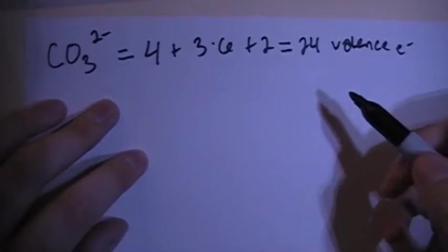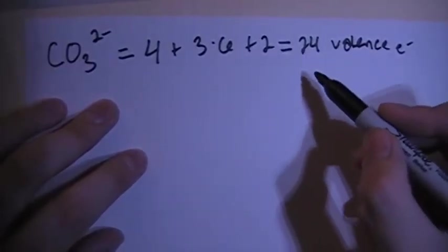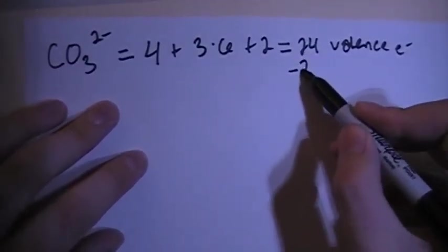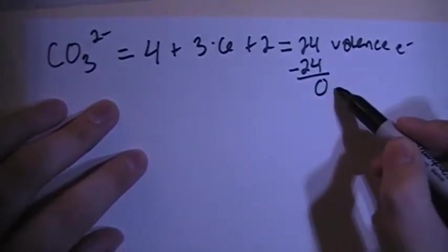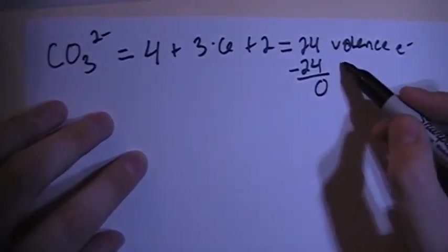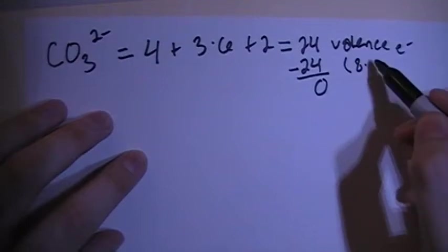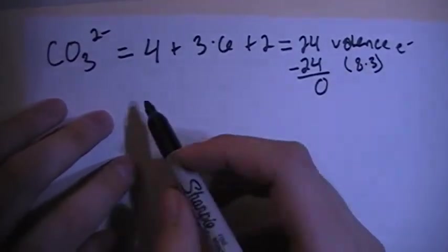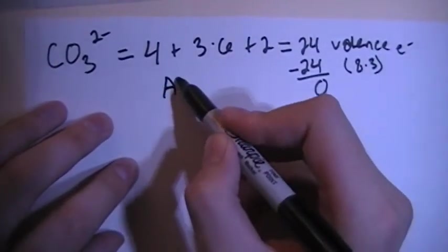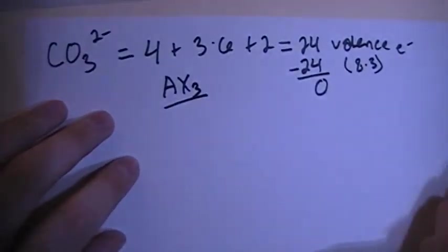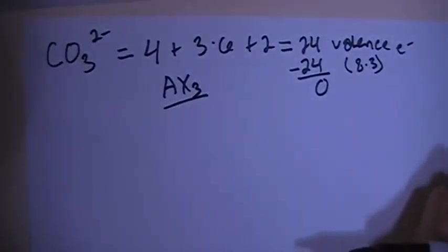We subtract the largest multiple of 8 out of 24, so that's going to be 24, which gives us 0 electrons left over. If you notice, 24 is 8 times 3, so that means that this structure is going to be an AX3 structure. So we can go ahead and start to draw it.